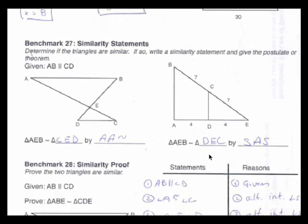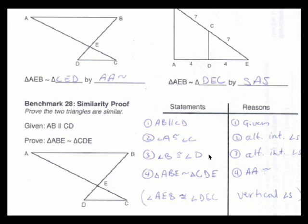Our final problem benchmark is benchmark 28. It's the similarity proof. I'm just using the example up here, so I'll put it in the statement and reason form to prove that these two triangles are similar, given that AB is parallel to CD. Well, I already know my first step. AB is parallel to CD. That's a given.